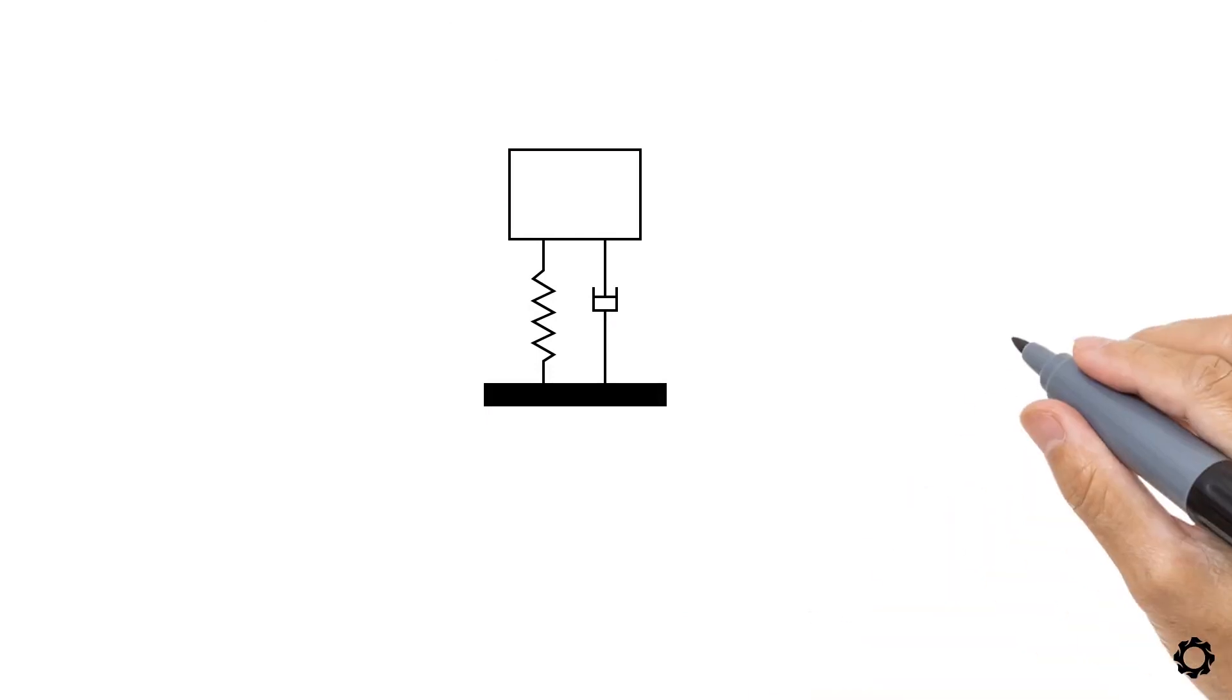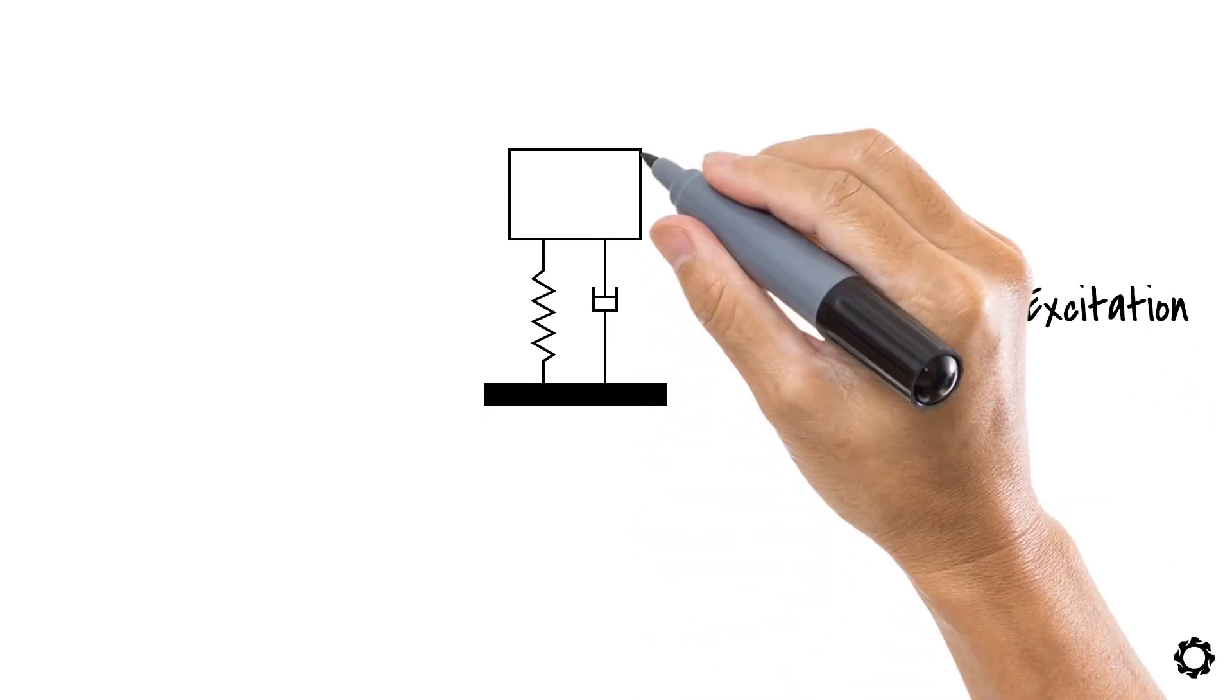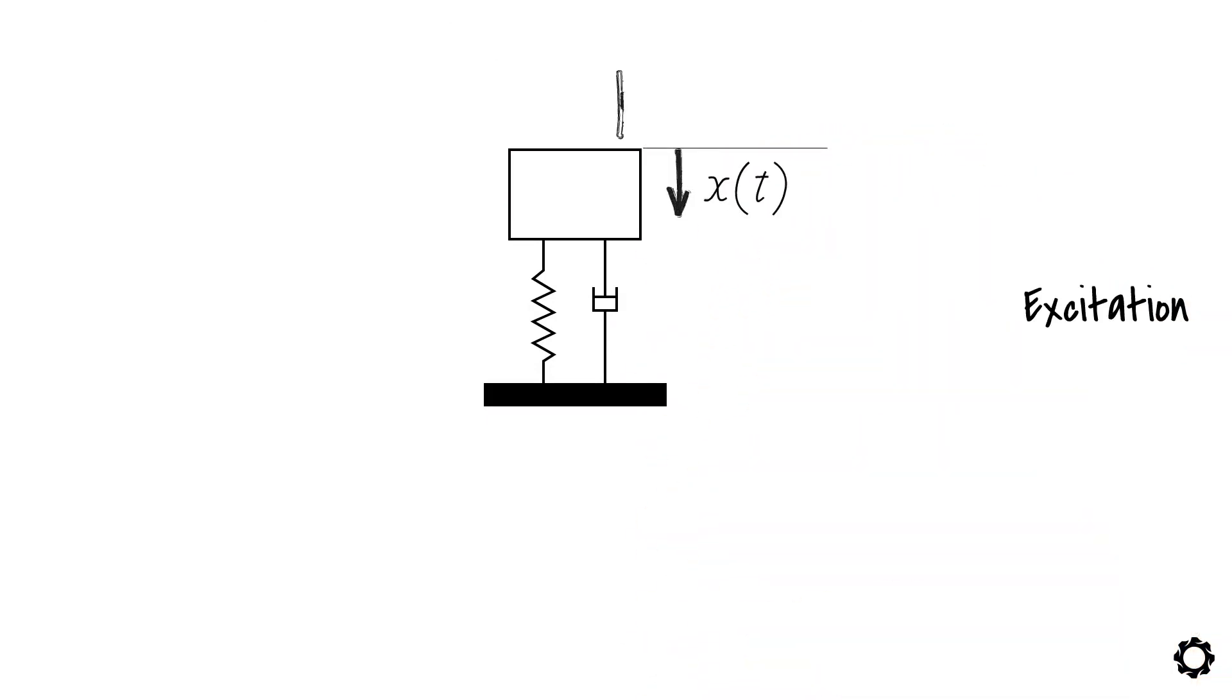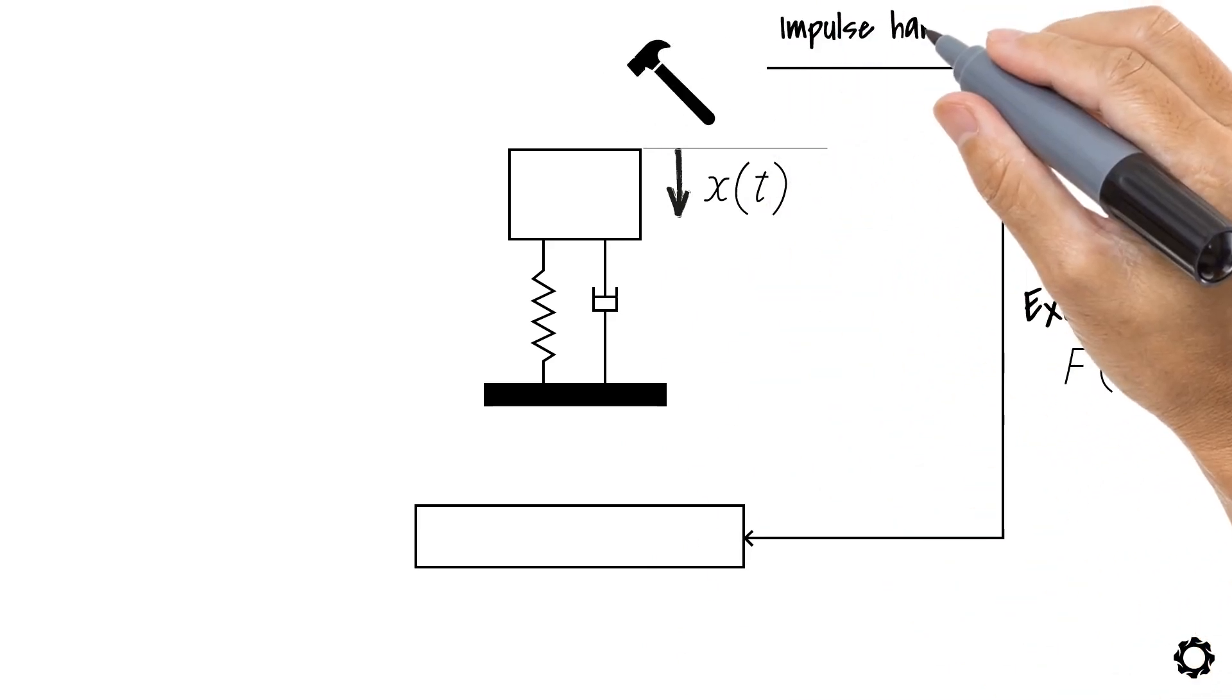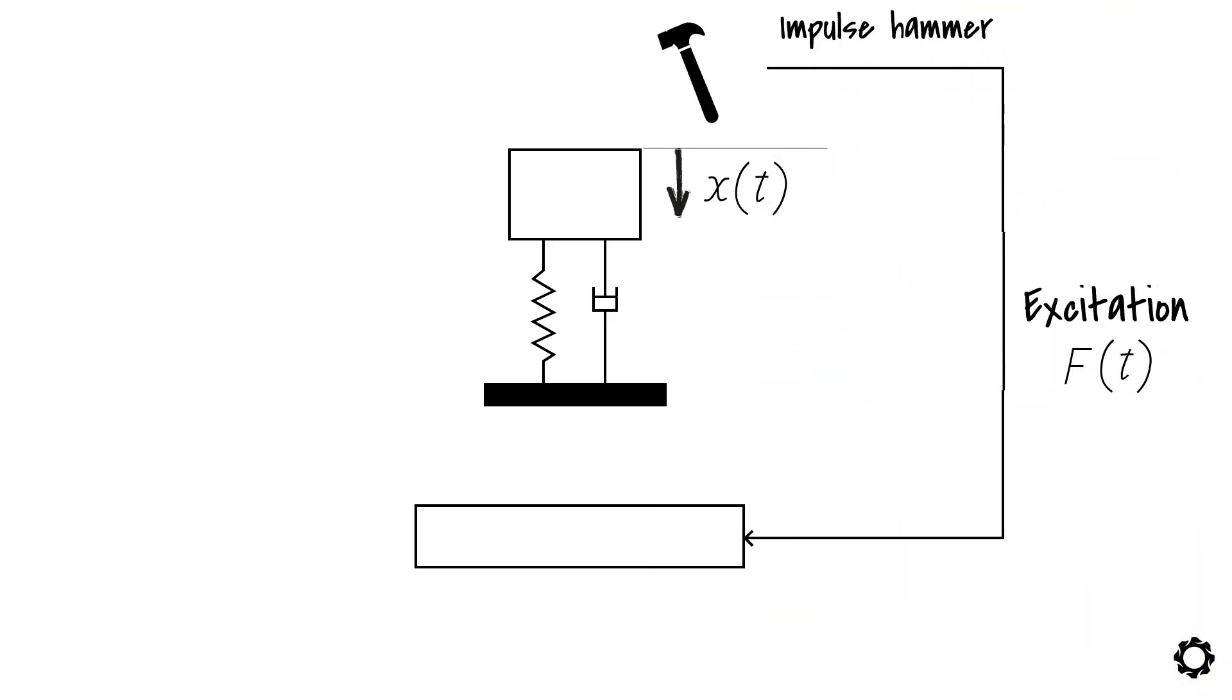Firstly we need an excitation device something to induce the vibration in the system. This device should also be capable of measuring the actual excitation force that is being applied to the object. An example of such device could be an impulse hammer which records the striking excitation force.